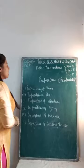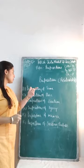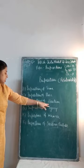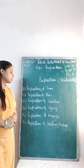On the basis of the relationship they express, we divide prepositions into six parts. First: prepositions of time. Second: prepositions of place. Third: prepositions of direction. Fourth: prepositions of agency. Fifth: prepositions of manner. And sixth: prepositions of reasons and purpose. Let's understand all these terms one by one in detail.